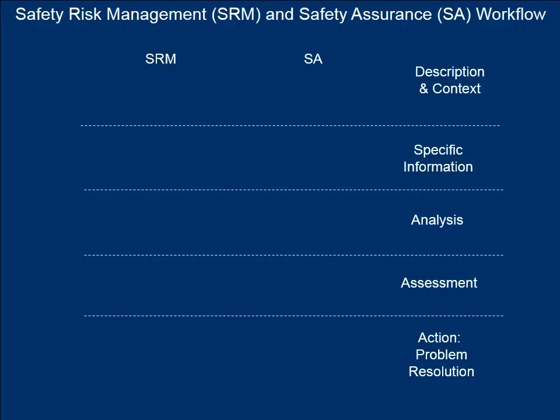In the decision-making process, there are five steps. During this part of the presentation, we will outline each of those five steps and demonstrate how they apply to the safety risk management and safety assurance processes, thus allowing us to better understand the systems and tasks involved. Step one is to gain a fundamental understanding of the problem, design, and context.